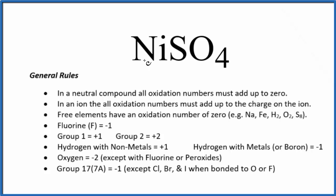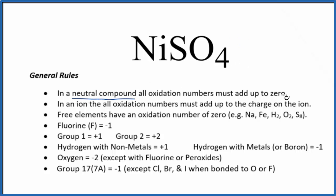To find the oxidation number for each element in NiSO₄ — nickel(II) sulfate — we'll use these rules. We see that there's no negative or positive written after the NiSO₄, because it's a neutral compound. That means all the oxidation numbers will add up to zero.